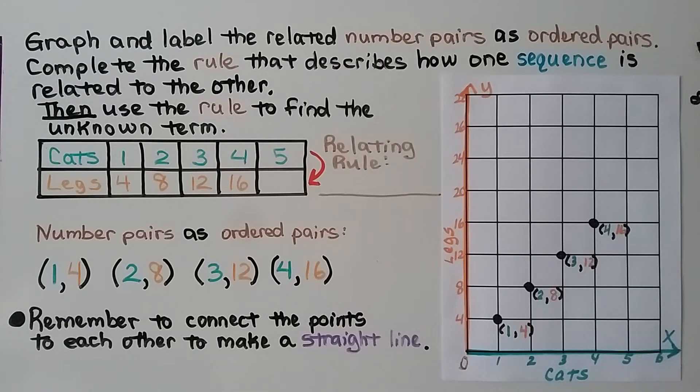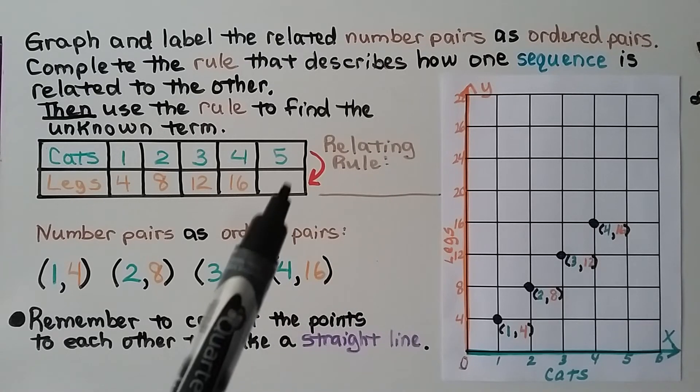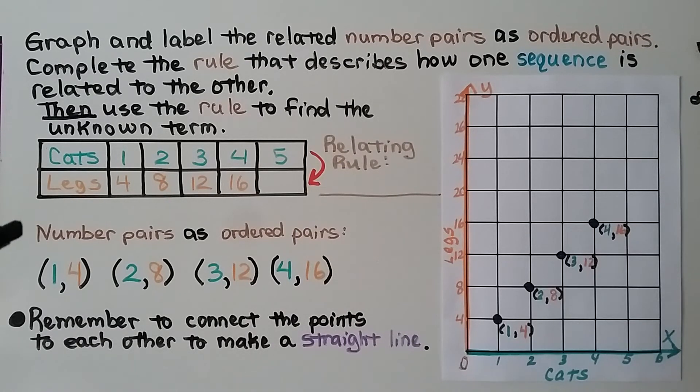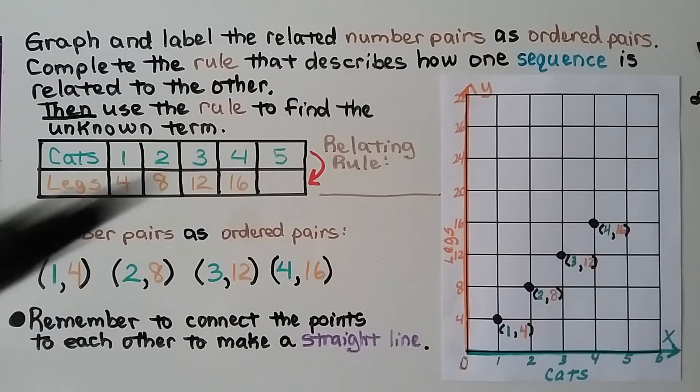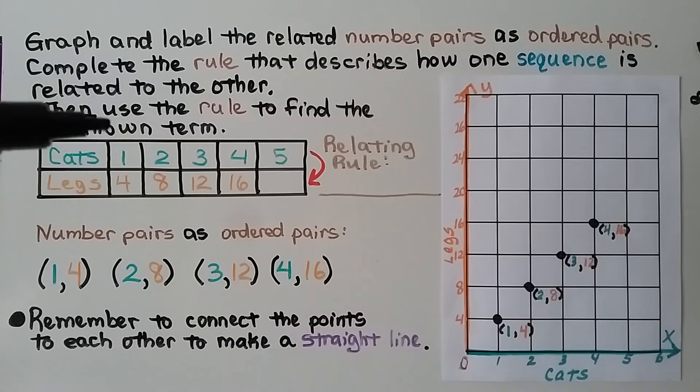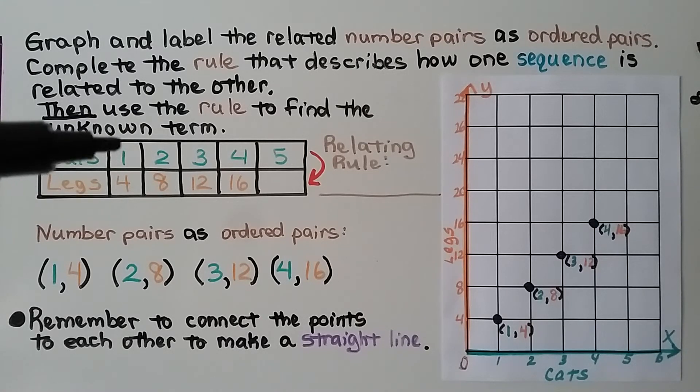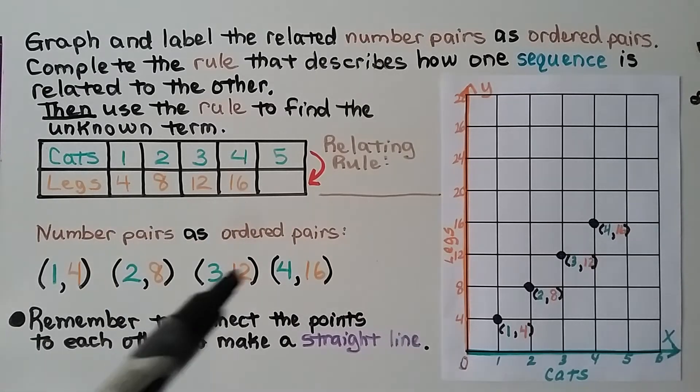We need to graph and label the related number pairs as ordered pairs and complete the rule that describes how one sequence is related to the other. Then we need to use that rule to find the unknown term. We write the number pairs as ordered pairs. We have a 1, 4, a 2, 8, a 3, 12, and a 4, 16. We don't know what that one is yet. We look at the relationship between the number of cats and the number of legs. We have a 1 and a 4. Well, 1 times 4 is 4. We have a 2 and an 8. Well, 2 times 4 is 8. So the relating rule, if we check it for each ordered pair, is multiply by 4.